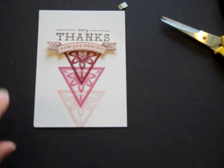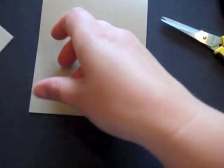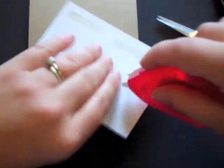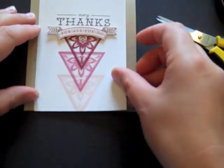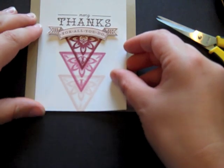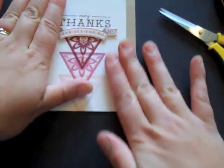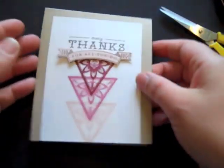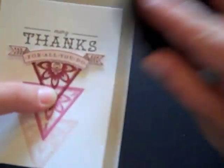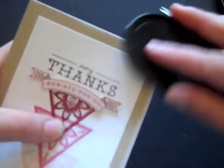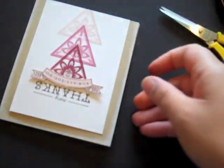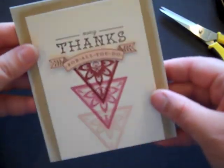So now I'm going to take my Classic Craft card base and adhere this to it. I'm actually going to adhere this to the bottom edge of the card. And I'm going to take some Fresh Snow ink and just swipe it right around the edge of that craft card base. And there's the completed card.